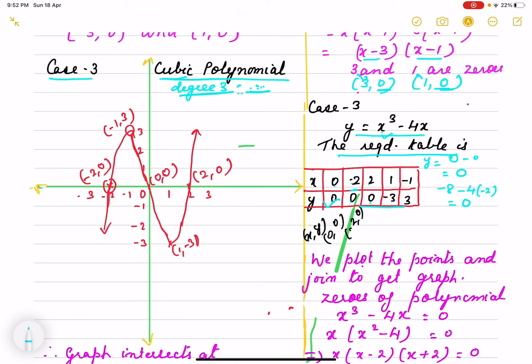So this way we find out different points. That is 0, 0, minus 2, 0, and 2, 0. We plot all these points and join freely the graph.